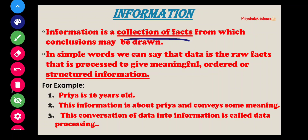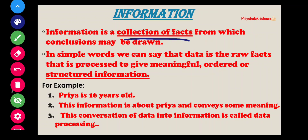Information is a collection of facts from which a conclusion may be drawn. In simple words, we can say that data is a raw fact that is processed to give meaningful, ordered, or structured information.